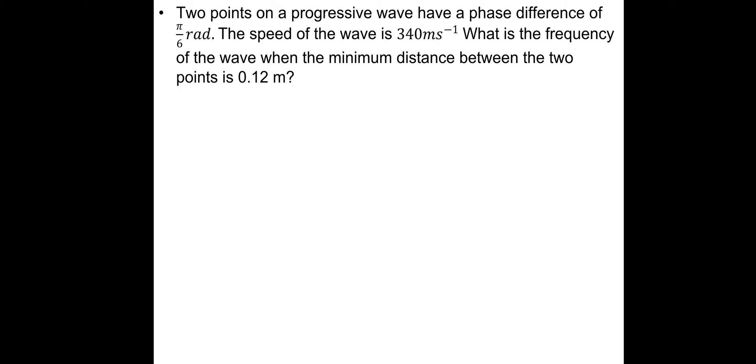This is the type of question you might get. Two points on a progressive wave have a phase difference of π/6 radians. The speed of the wave is 340 m/s. What is the frequency of the wave when the minimum distance between the two points is 0.12 meters? We've got the wave speed, we want the frequency. So we need wave speed and wavelength. It says that π/6 radians equals 0.12 meters. We need to figure out how many π/6 radians go into a full wave.